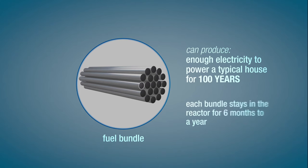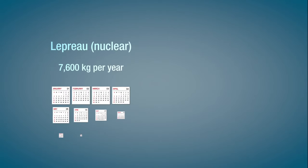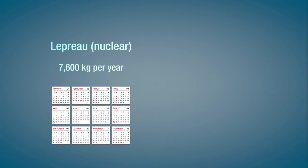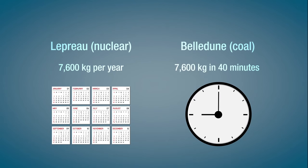Each bundle stays in the reactor for between 6 months to a year. That's about 7,600 kilograms of fuel per year. By comparison, Belledune Coal Generating Station goes through 7,600 kilograms of coal in about 40 minutes.